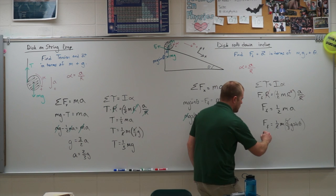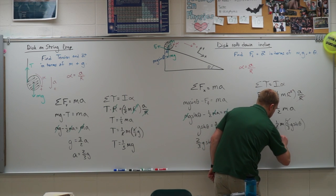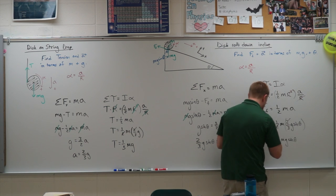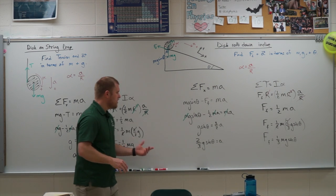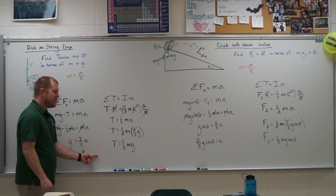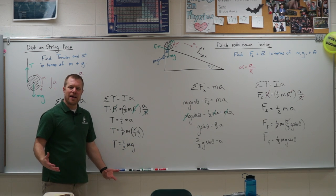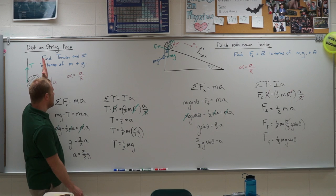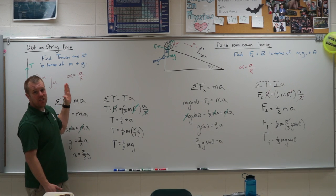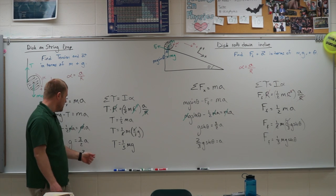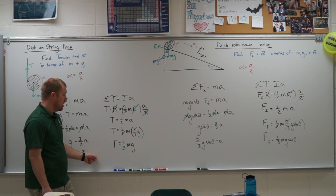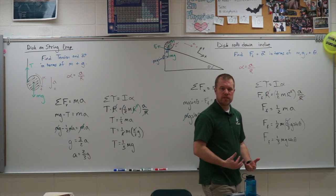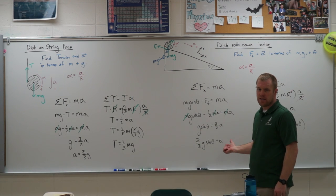Notice the similarity between the two problems: the vertical disc problem doesn't have a sine theta. Why not? Because the angle of a vertical incline is ninety degrees, and the sine of ninety degrees is one. So in reality, these are very similar problems and they solve in very similar ways.